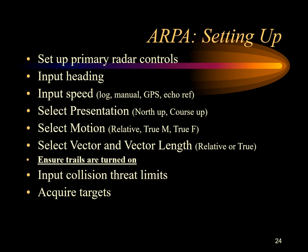Select the presentation: north-up, course-up, or head-up depending on your preference. Select the motion: relative motion or true motion. Select the vector and vector length: relative vector or true vector. Input the collision threat limits — the minimum CPA and minimum TCPA you want — to determine how close another vessel should come before an alarm is triggered. Ensure that the trails are switched on so you can track the history of target movement.